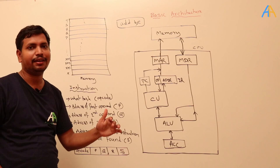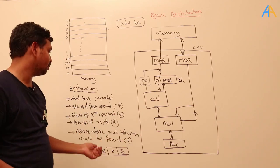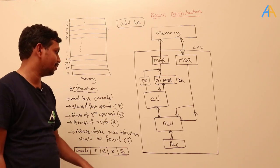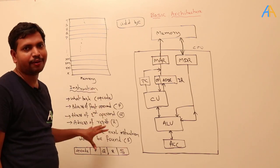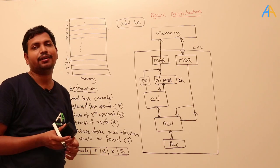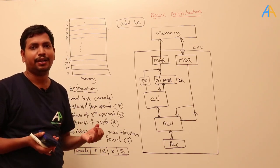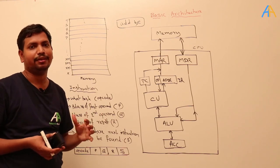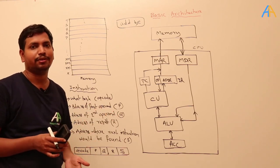The instruction should also contain where it should get the next instruction from — which memory location it should fetch next. This is the format of an instruction. Instructions will change — addition, subtraction, logical operations, data manipulation — everything will be there. Instructions will vary from processor to processor.